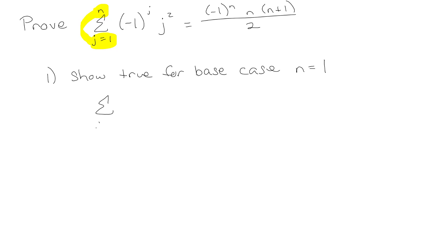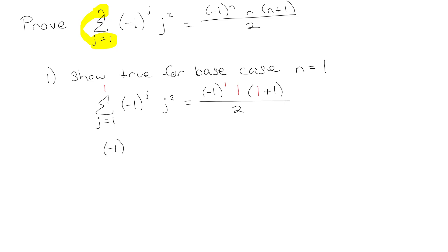Everywhere we see an n, we put a 1. On the left side, since there's only one term and it's 1, everywhere we see a j we put a 1, giving us 1 squared. We ask: is that equal to the right side, which is negative 1 times 1 times 2 over 2? That gives negative 1 on the right. Is 1 squared equal to negative 1? Yes, negative 1 equals negative 1. So we've proved it for the base case.